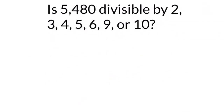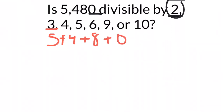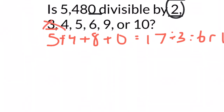Is 5,480 divisible by two, three, four, five, six, nine, or ten? Let's start with two. You look at the last digit — if it's even, it's divisible by two. It is even, so it is divisible by two. Now let's look at three. Add all the digits: five plus four plus eight plus zero equals 17. Since 17 is not divisible by three — that's six remainder one — three does not go into 5,480 evenly.